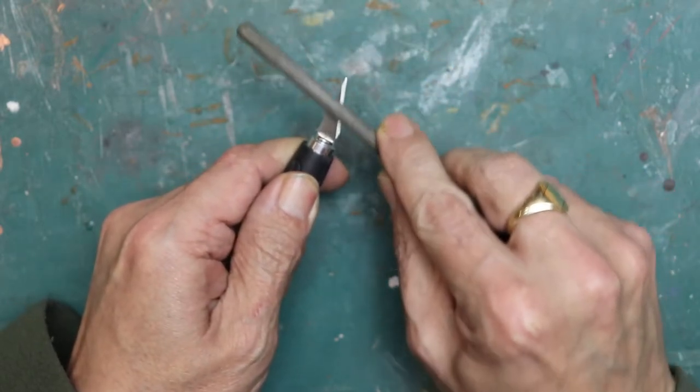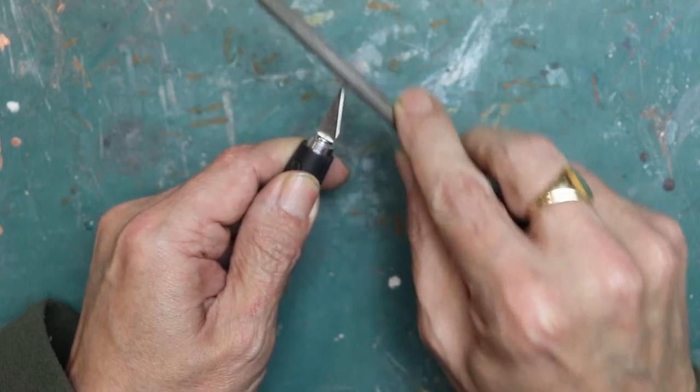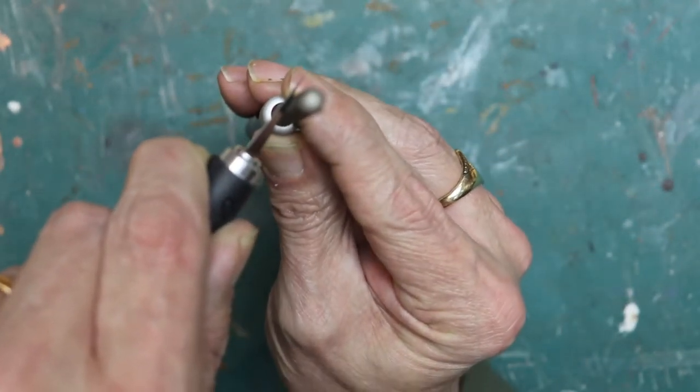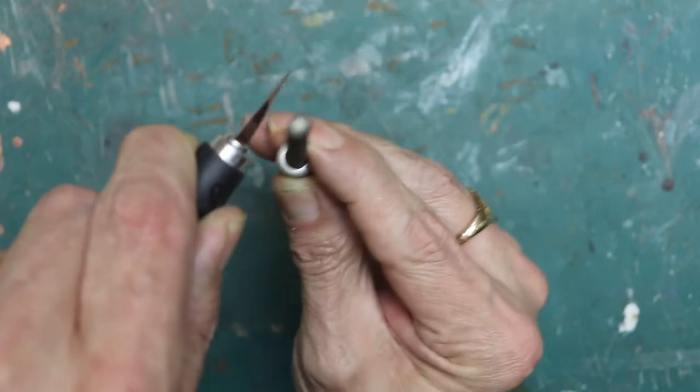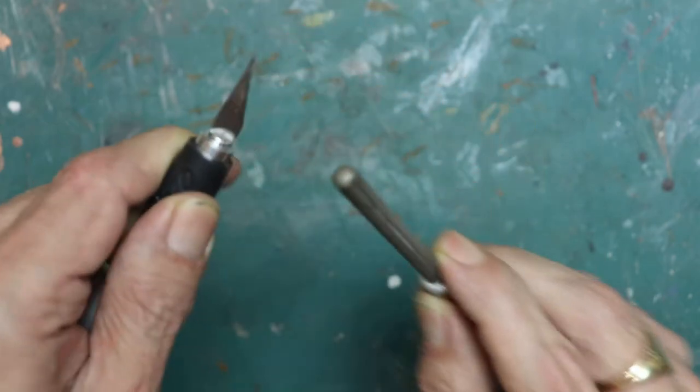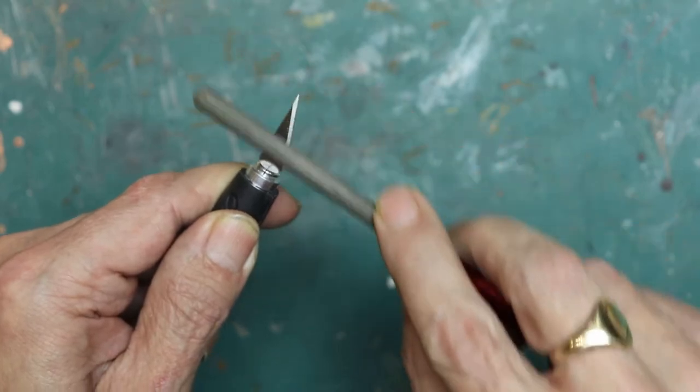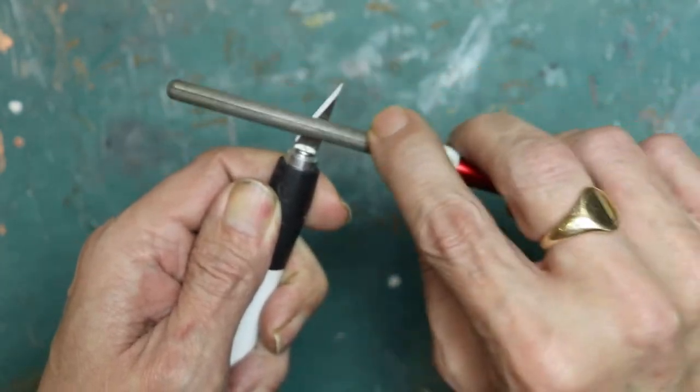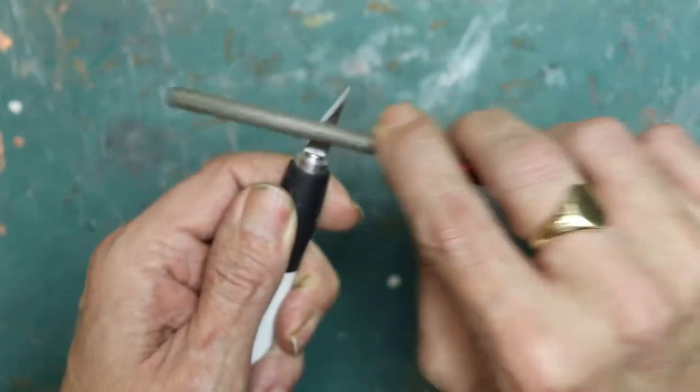Use exactly the same principle but in reverse, in that you basically move the stone over the knife rather than knife over the stone. It's the same process of drawing it across with gentle strokes, equal numbers of strokes on both sides, and then lastly do a couple of strokes on each side to get rid of the little burrs that might have appeared.